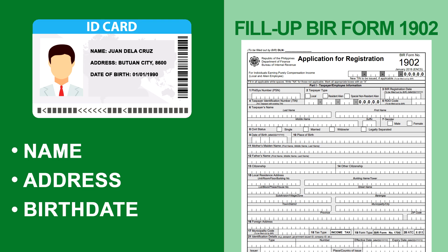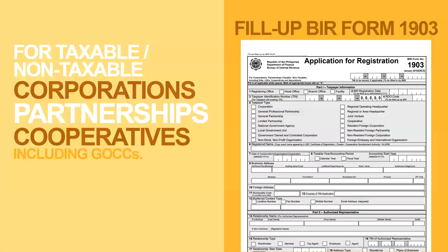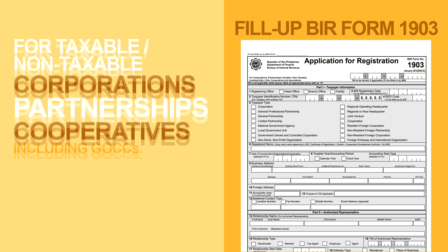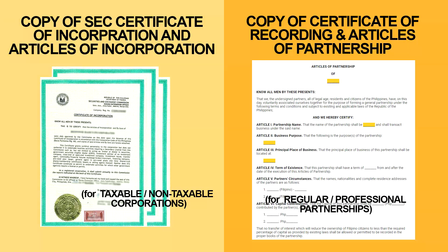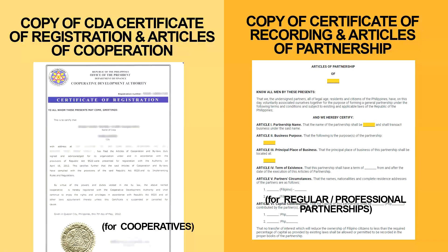For taxable or non-taxable corporations including government-owned and controlled corporations, partnerships, and cooperatives: fill up BIR Form Number 1903 and present the following attachments — copy of SEC Certificate of Recording and Articles of Incorporation for taxable or non-taxable corporations; copy of Certificate of Recording and Articles of Partnership for regular or professional partnerships; copy of CDA Certificate of Registration and Articles of Cooperation for cooperatives.